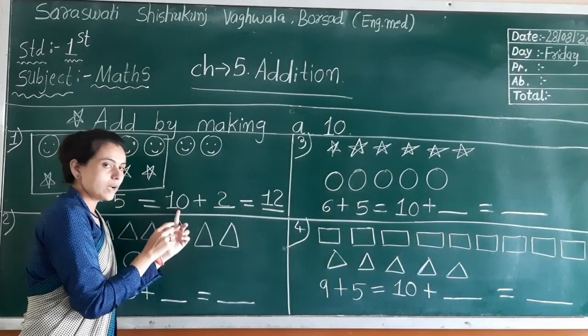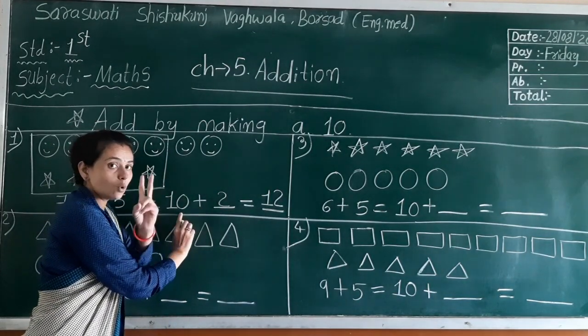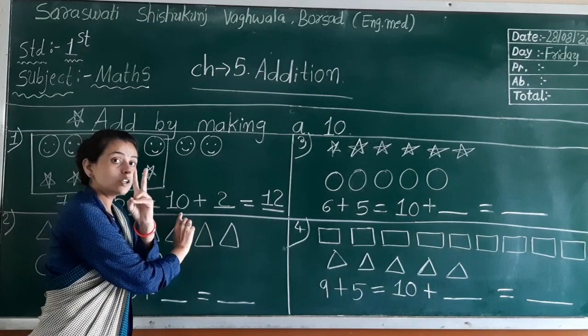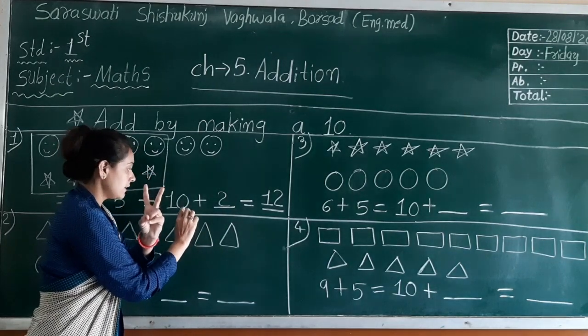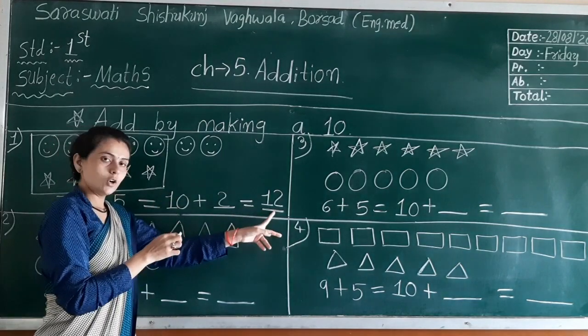How to add this? You have already 10 and you have to add 2. So you have to make 2 fingers and: 10, 11, 12. Okay?